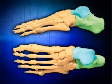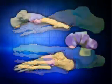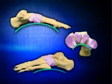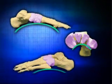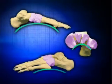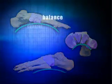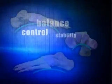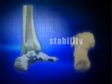When we look at the foot it appears similar to an old medieval building which has a keystone to support the upper structure. The cuboid, cuneiforms and navicular are the keystone of the foot. This supports the upper structure and maintains the balance and control required to give the foundational stability.